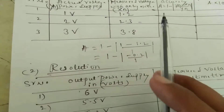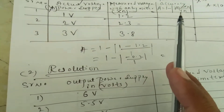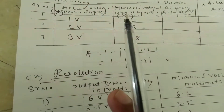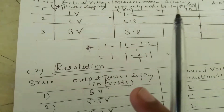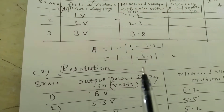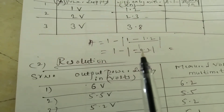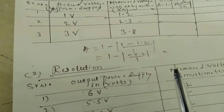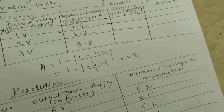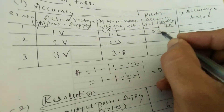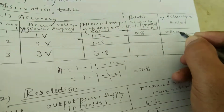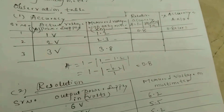Put the values into the formula: A = 1 − (yn − xn) / yn. So A = 1 − (1 − 1.2) / 1. That gives 1 − (−0.2) / 1, which equals 1 − (−0.2) = 0.8. Then A × 100 = 80%.